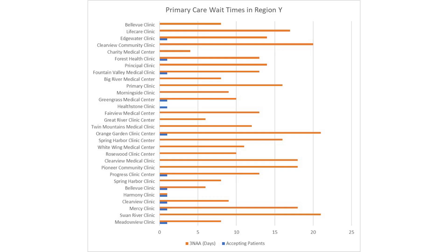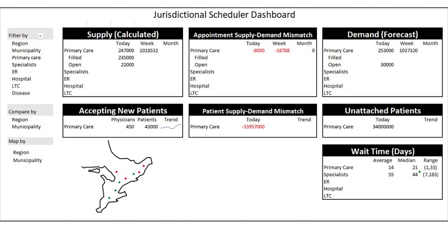What if we stepped up to an OHT level? OHTs could have an app showing something like 30 clinics, where orange indicates wait time to be seen at that clinic and blue indicates whether they're taking new patients — a valuable tool for them. Or we could go all the way up to the jurisdictional scheduler dashboard for a system planner. They can see total jurisdictional supply, demand, appointment supply-demand mismatch, who's accepting patients, unattached patients, and wait times — and they could slice this by region, emergency room, long-term care, disease-based, really any way. A future potential function would even allow disease-based analysis.